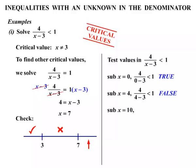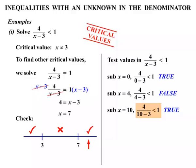We choose x equals 10 to substitute into the inequality. Working that out, it's a true statement, so we give that a tick. The solution therefore is x less than 3, and x greater than 7.